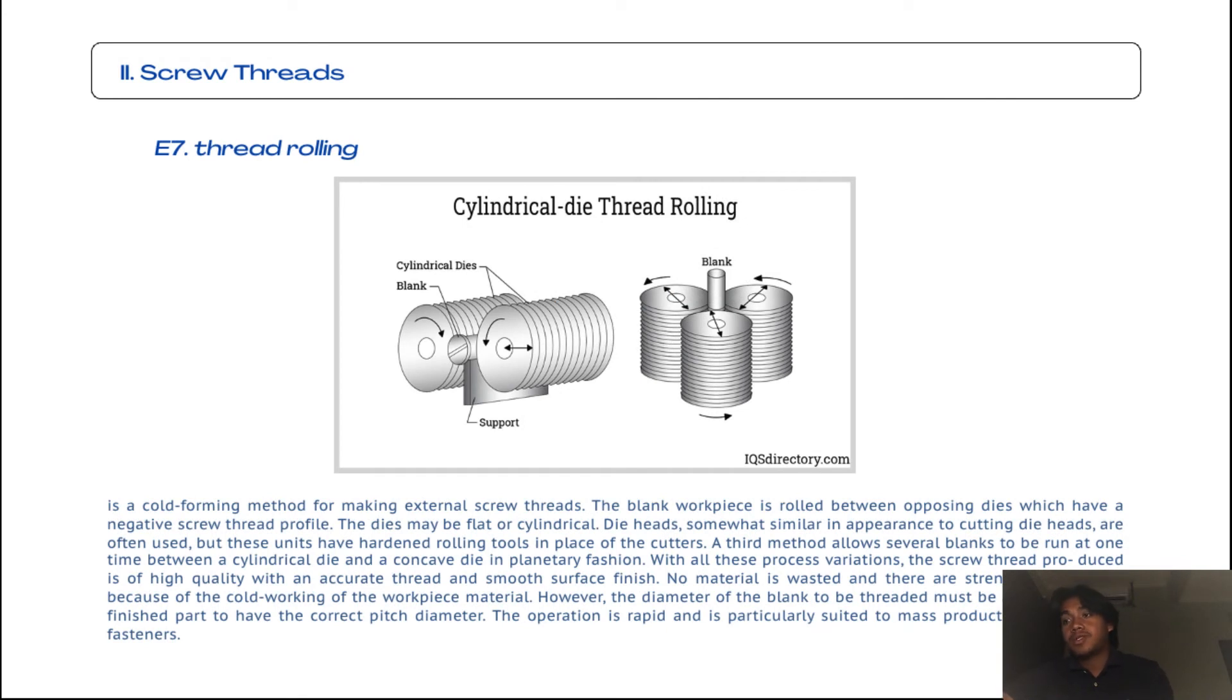The seventh subtopic from screw threads is thread rolling. It's a cold-forming method for making external screw threads. The blank workpiece is rolled between opposite dies which have a negative screw thread profile. The dies may be flat or cylindrical. Die heads somewhat similar in appearance to cutting die heads are often used, but these units have hardened rolling tools in place of cutters. A third method allows several blanks to be run at one time between a cylindrical die and a concave die in a planetary fashion. With all process variations, the screw thread produced is high quality with an accurate thread and smooth surface finish. No material is wasted and there are strength advantages because of the cold-working of the workpiece material. However, the diameter of the blank to be threaded must be accurate for the finished part to have the correct pitch diameter. The operation is rapid and particularly suited to mass production of threaded fasteners.